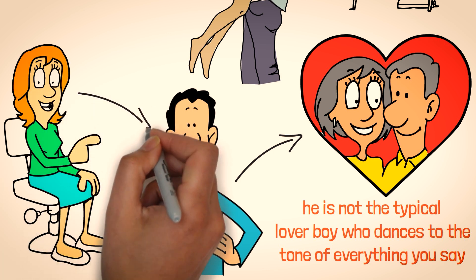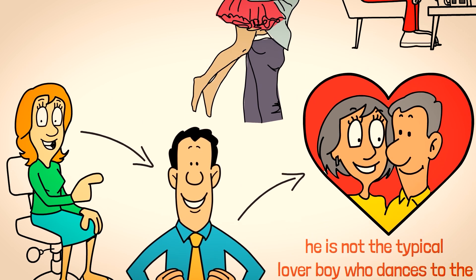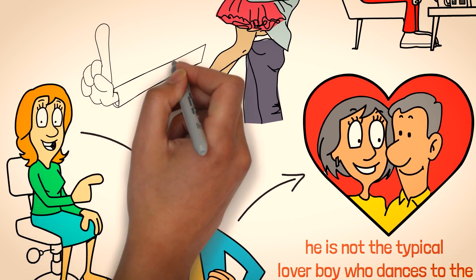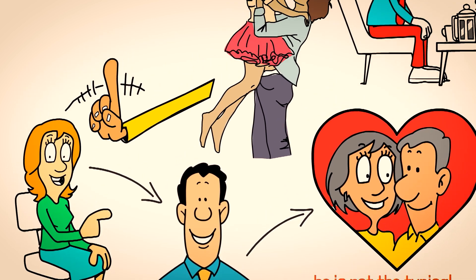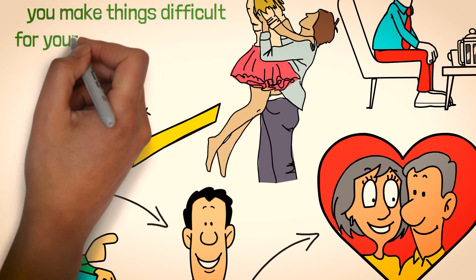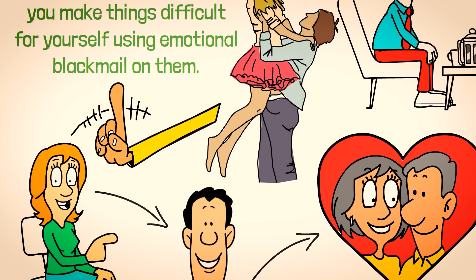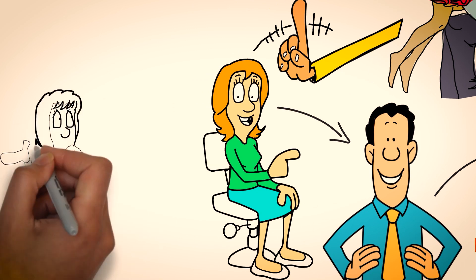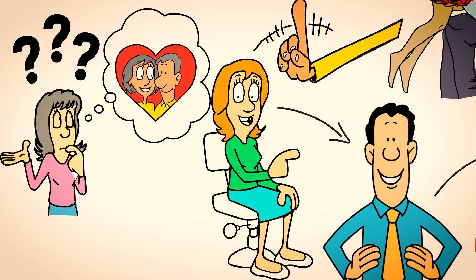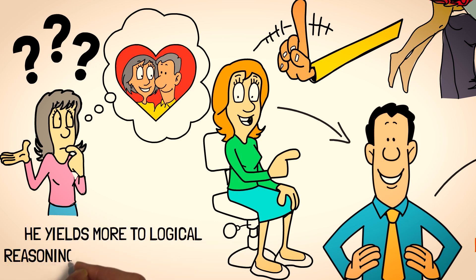Trying to make him feel guilty to get things done your way is a wrong strategy to use on a sigma. They have a low tolerance for emotional blackmail of any kind and you make things difficult for yourself using emotional blackmail on them. Do you wonder how you can win his heart? Try logical reasoning and watch his response. He yields more to logical reasoning than to manipulation.